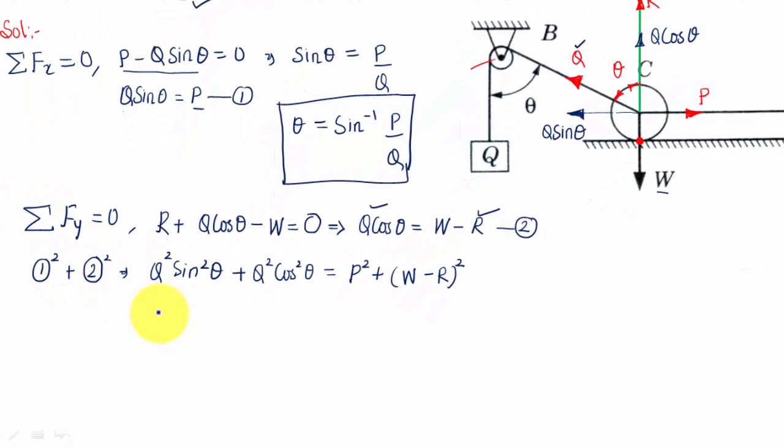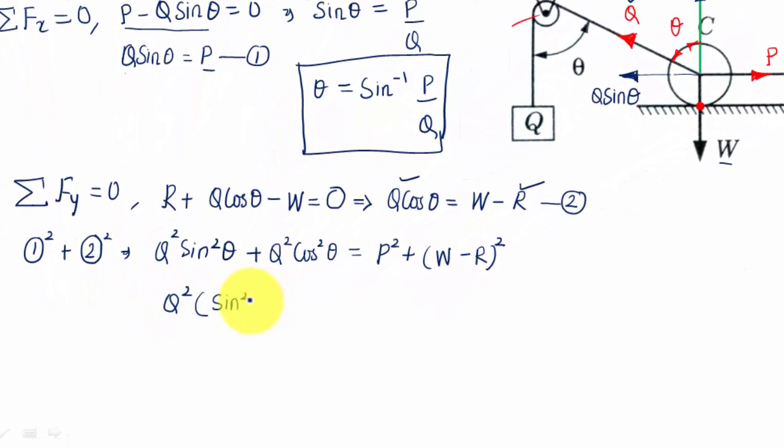The best thing to do is take Q square as common. When you do so you have a trigonometric identity in front of you: sine square theta plus cos square theta is equal to one. So Q square into one is equal to Q square, and Q square is equal to P square plus W minus R whole square. We need the value of reaction R.